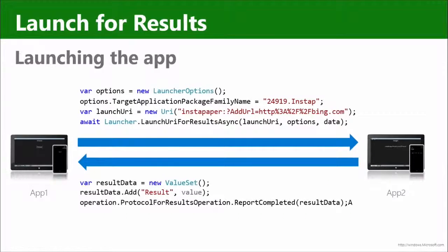Launch for results allows you as an app developer to create an experience that extends across multiple apps. You can have one app launching another app, which launches another one, creating integrated experiences. Each of the apps in the chain has its own little UI to handle part of the transaction, and they cooperate with each other until finally a result gets passed back to the original caller.